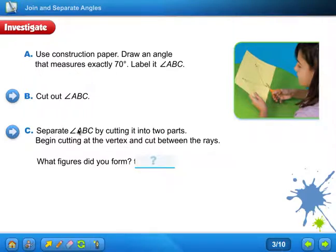Next, separate angle ABC by cutting it into two parts. Begin cutting at the vertex and cut between the rays. Okay, so first you should have cut this out right here on those lines. Now you should start here after that's been cut out for step C. And you should go and cut it right up the middle, the sort of middle. It doesn't matter. It's not saying where to cut it, but you just want to have two pieces. So what figures did you form? You formed two angles. So you should have two angles in your hand right now.